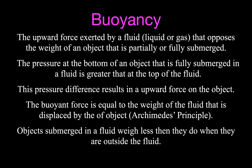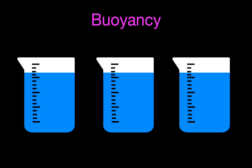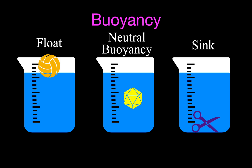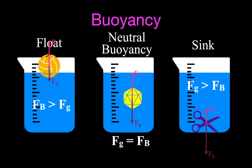Objects that are submerged in a fluid weigh less than they do outside of that fluid. Conceptually, we have three cases: an object like a ball that floats, an object like metal scissors that sinks, and an object that stays in the middle — we call that neutrally buoyant. When something floats, the buoyant force is greater than gravity. When it sinks, gravity is greater than the buoyant force. When neutrally buoyant, those two forces are equal. In all three cases, both gravity and a buoyant force are present.